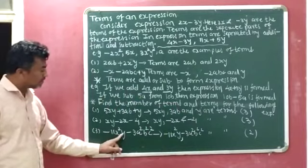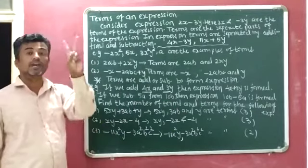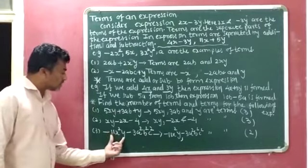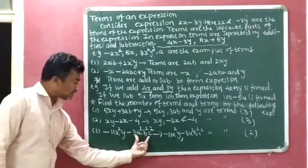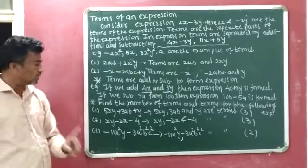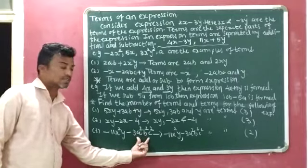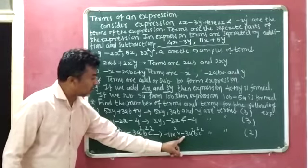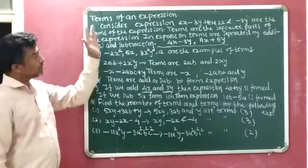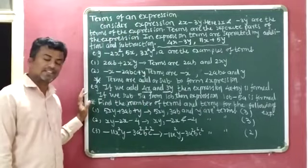Question 3: minus 11x squared y minus 3a squared b squared c squared. In this expression, there are 2 terms, since they are separated by subtraction. The first term is minus 11x squared y and the second term is minus 3a squared b squared c squared. This is the introduction to terms of an expression. I hope you can understand. Thank you.